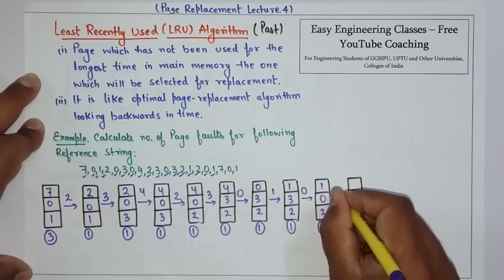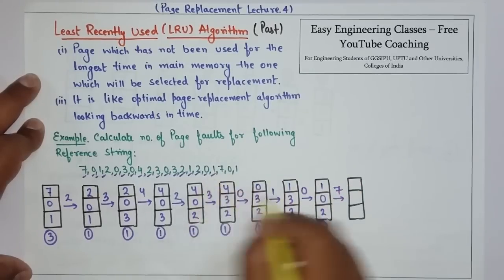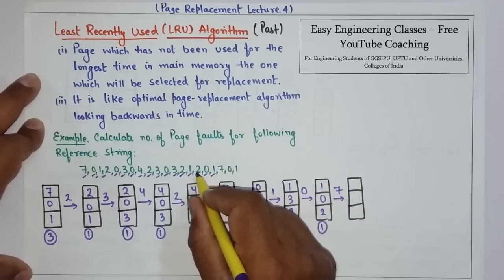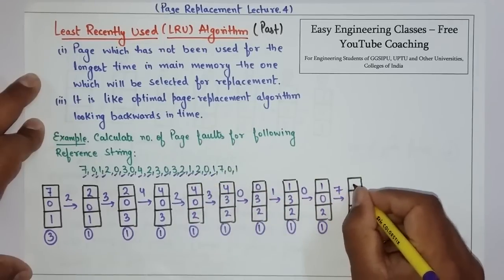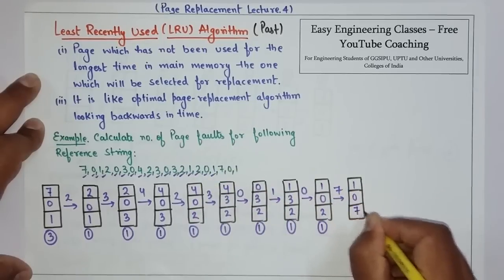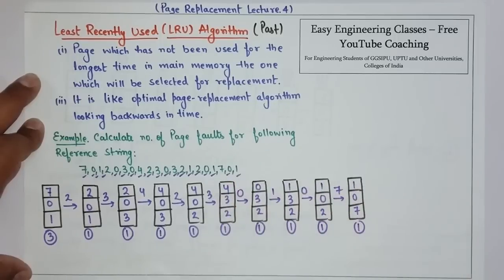7. If you see out of 1, 0 and 2, 2 is least recently used. So replace it with this 1, 0 and 7. 0 is already there. 1 is already there.